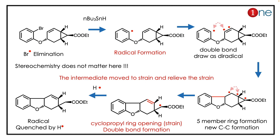The stereochemistry shown here is given for confusion — it doesn't play any role here. The key concept to learn is that the intermediate always travels toward the strain and tries to quench the strain.